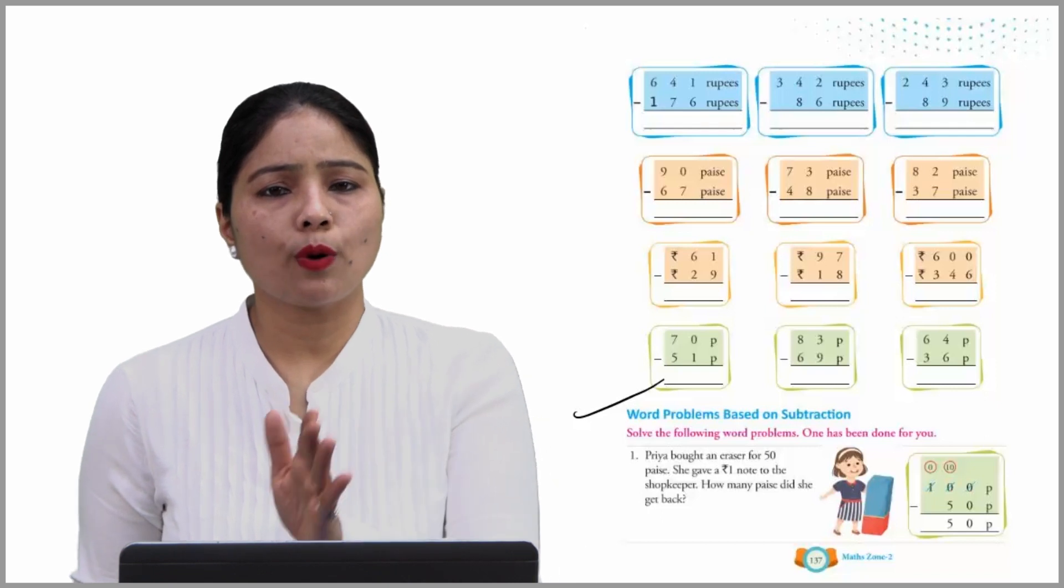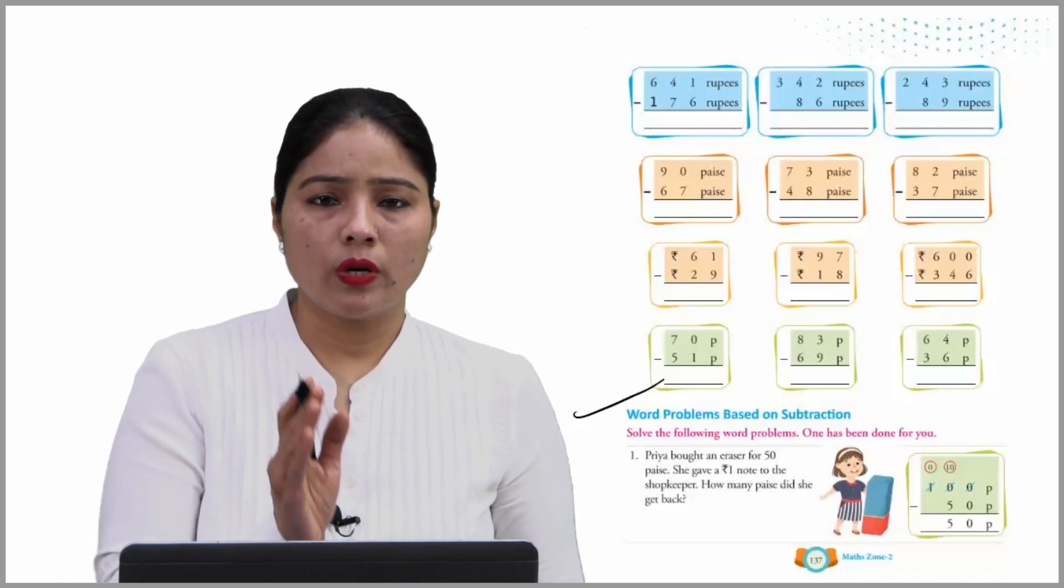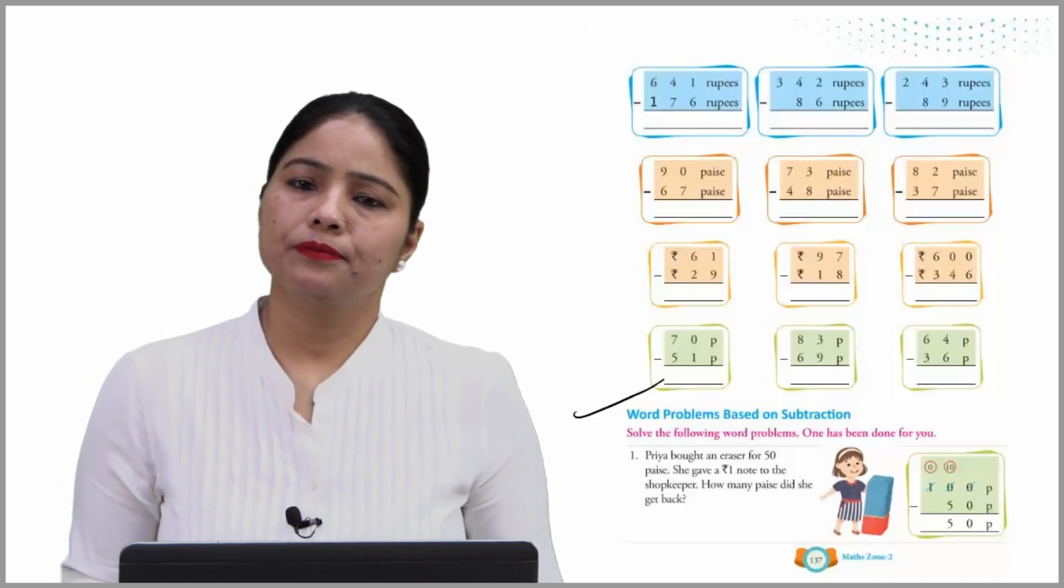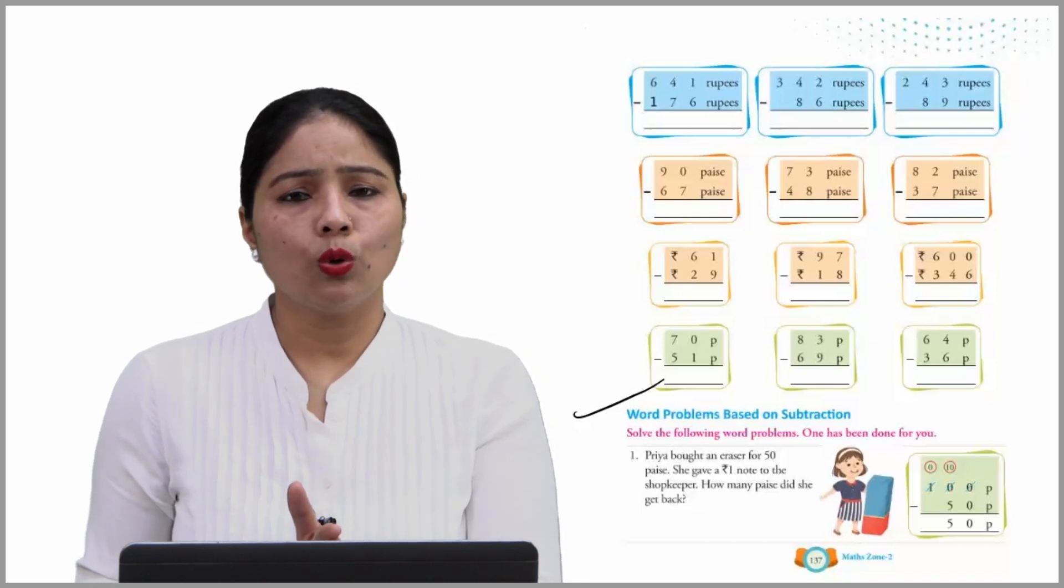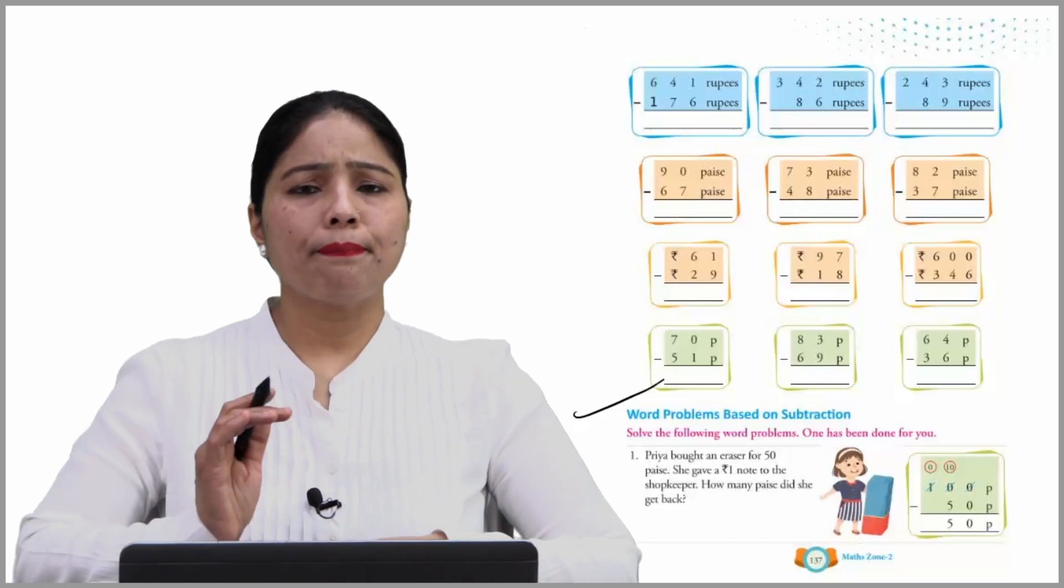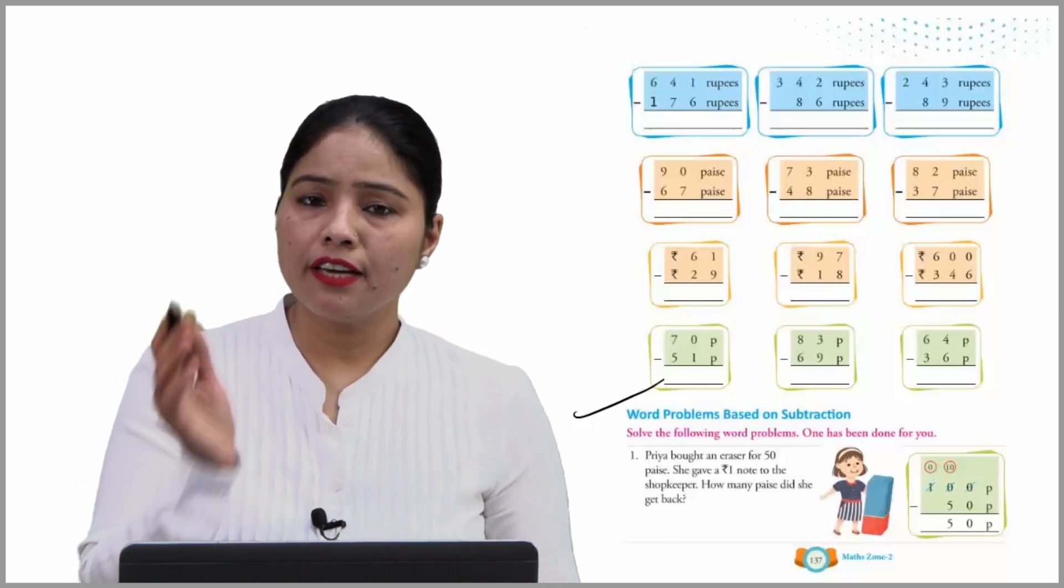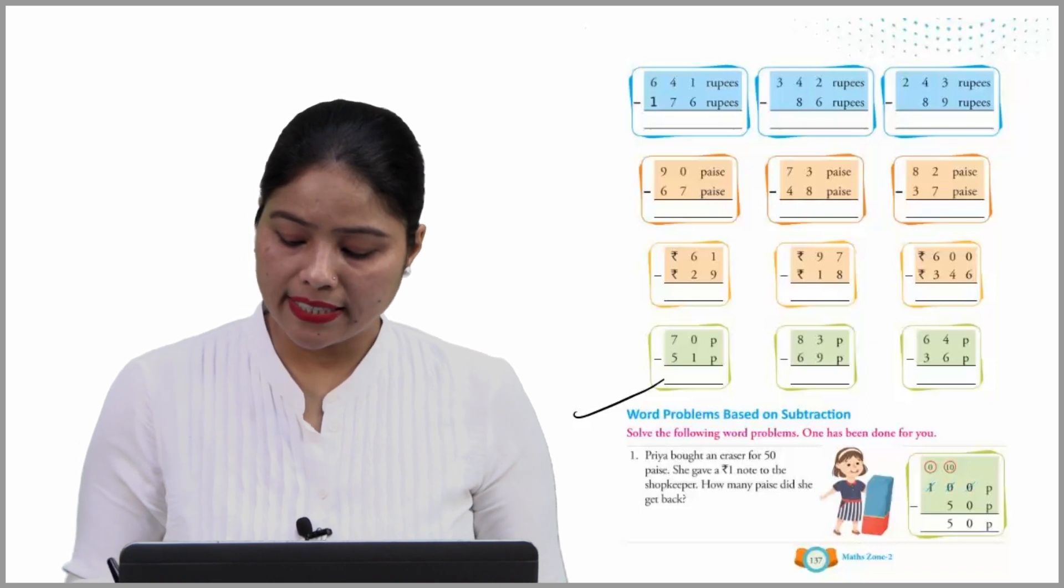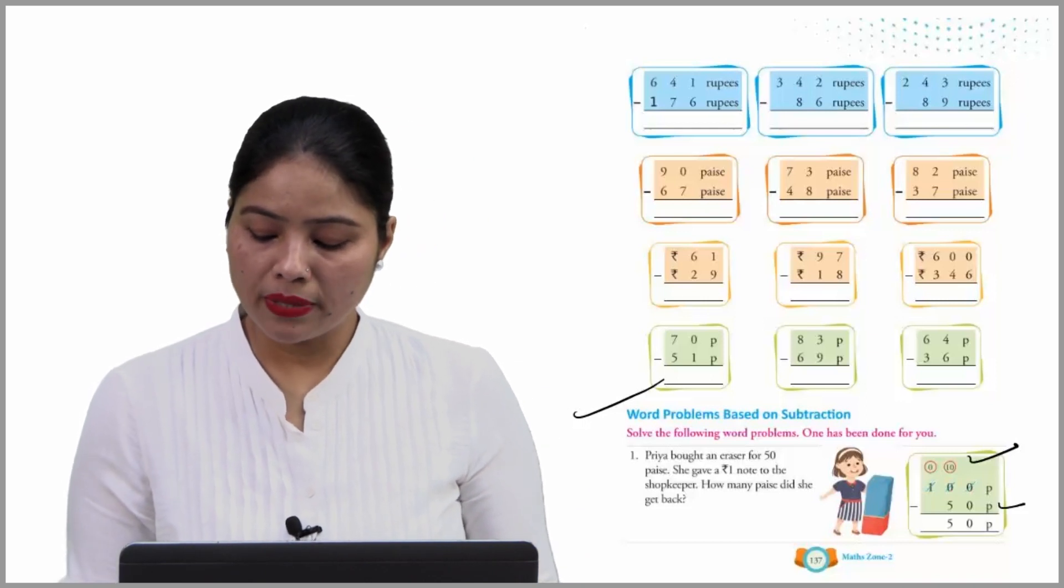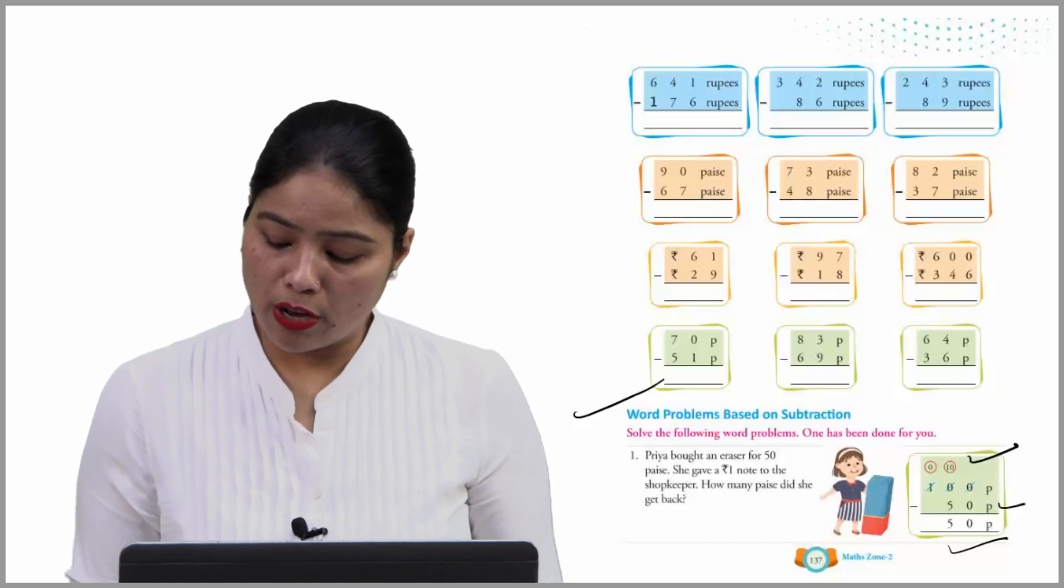Now next is word problems based on subtraction. Solve the following word problems. One has been done for you. Priya bought an eraser for 50 paise. She gave a 1 rupee note to the shopkeeper. How many paise did she get back? We know 1 rupee has 100 paise. So just write 100 paise over here. And you have to subtract 50 from them. If you subtract 50, you will get 50 paise. This is already done, so now move on.